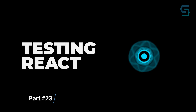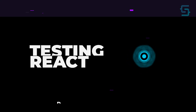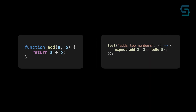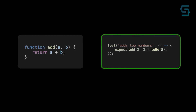Hi and welcome to another tutorial. In this one we're going to be learning how to test React. Imagine that you have a simple add function which adds two numbers and returns back a result. To test this function we would create another test function where when we call 2 and 3 as arguments we would expect to return back 5, which would make our tests run successfully.